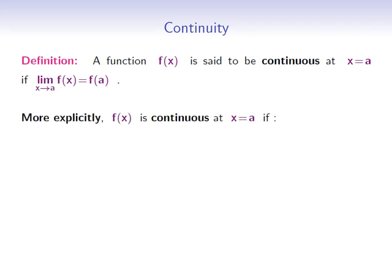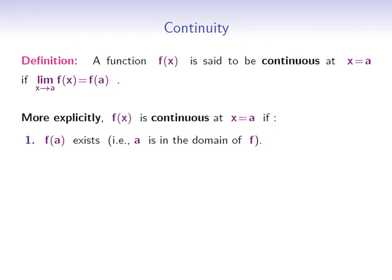More explicitly, f of x is continuous at x equals a if the following three conditions hold. One: f of a exists — in other words, a has to be in the domain of the function f. Two: the limit of f of x as x approaches a exists and has to be a number. And three: the limit of f of x as x approaches a has to be equal to the value of the function at a, f of a.